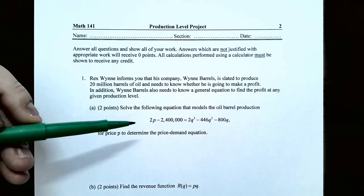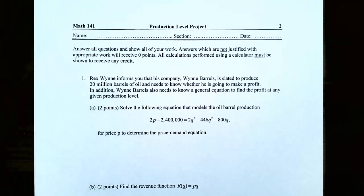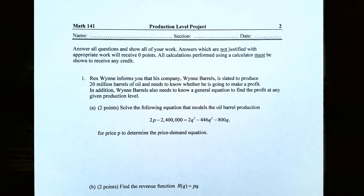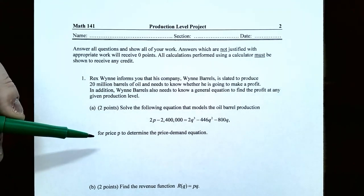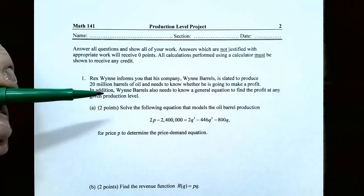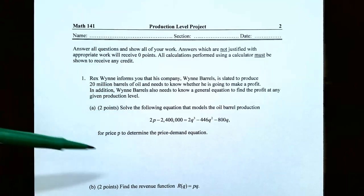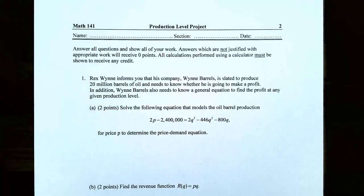In Part A, you have the demand equation: 2P subtract 2,400,000 equals 2Q cubed, subtract 446Q squared, subtract 800Q. This equation models the oil barrel production level where P is price per barrel. The question asks you to solve for P to obtain the price-demand equation — get P by itself on one side of the equation.